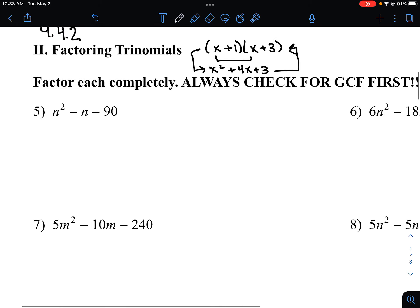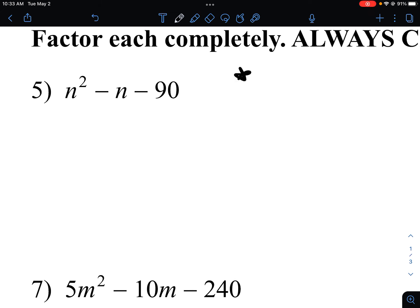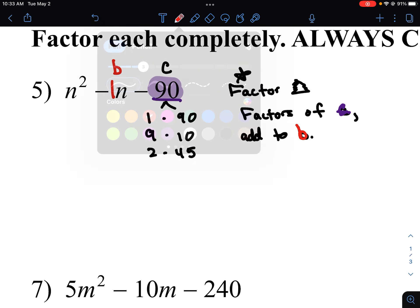First off, always check for GCF. We do not have that for number 5 here. The idea is what you want to do is list out the factors. I call this the little factor tree method. 90, we can think of as 1 times 90. We can also think of it as 9 times 10. There's 2 and 45. There's a few options. But what you are looking for is factors of C that add to B. And where that comes from is factors of, we call 90 or C value. And we call the number in front of N the B value. So they have to be factors of the last value, C,